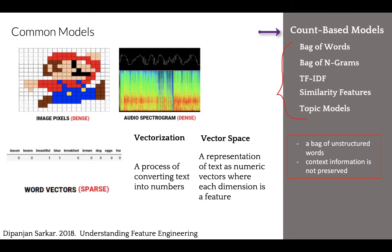Traditional feature engineering strategies for textual data are count-based and belong to a family of models known as a bag-of-words model. This includes term frequencies, TF-IDF, n-grams, and topic models.